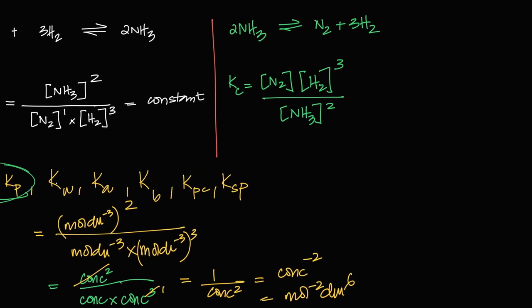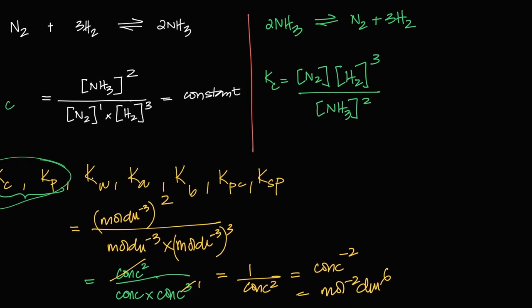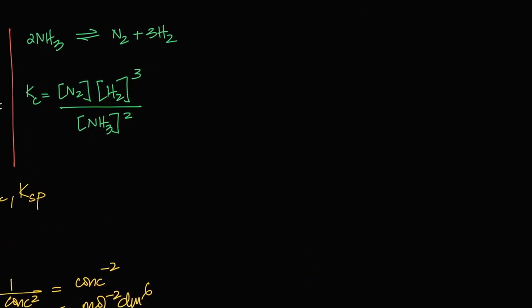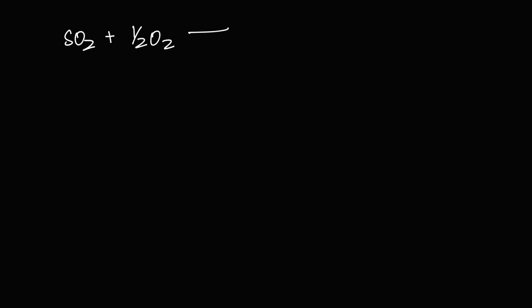Let's look at another equilibrium: SO₂ + ½O₂ ⇌ SO₃, seen in the contact process. This is the oxidation of sulfur dioxide to sulfur trioxide, catalyzed by oxides of nitrogen in air — which is why oxides of nitrogen are harmful; they catalyze SO₂ to SO₃, which forms acid rain. What is the Kc for this equilibrium?